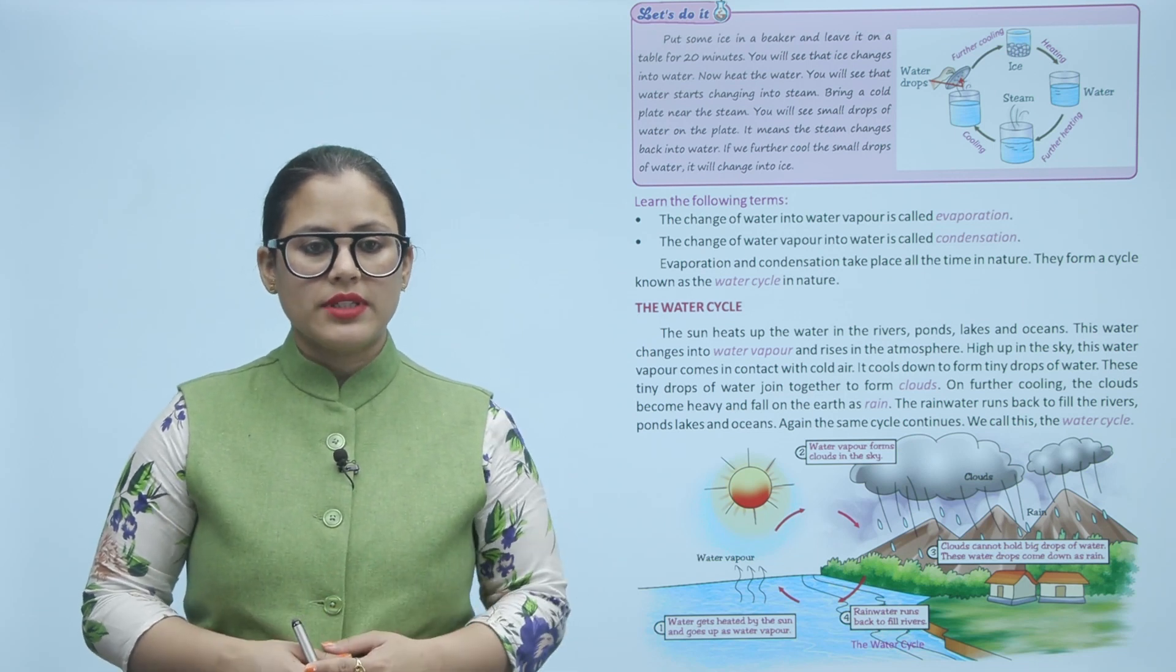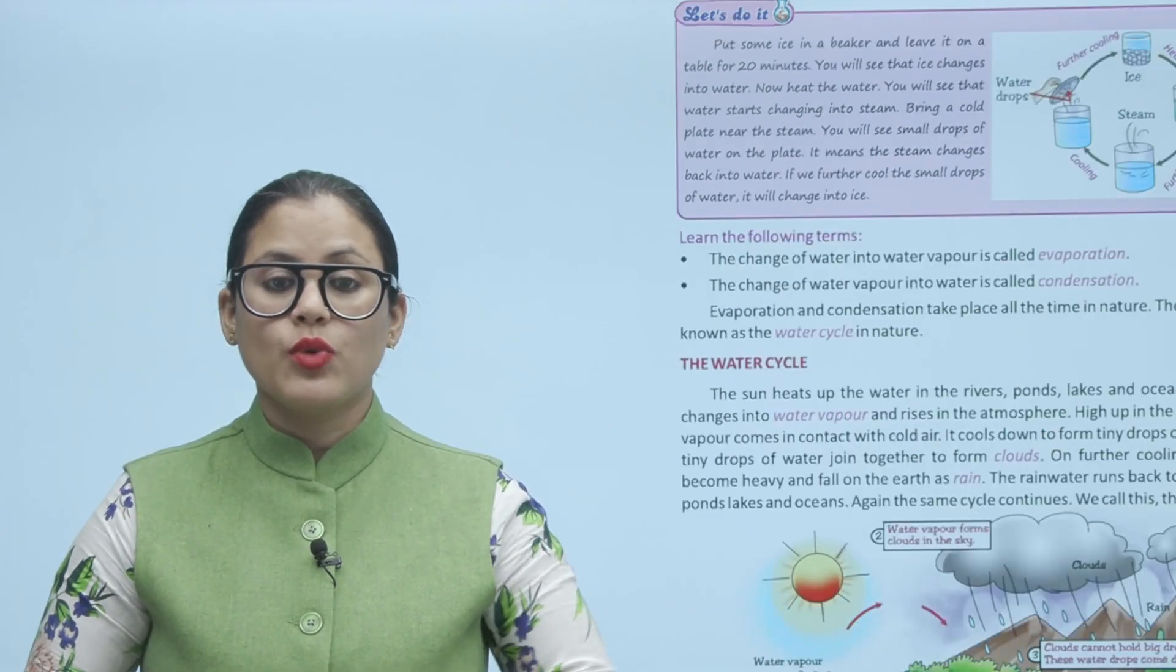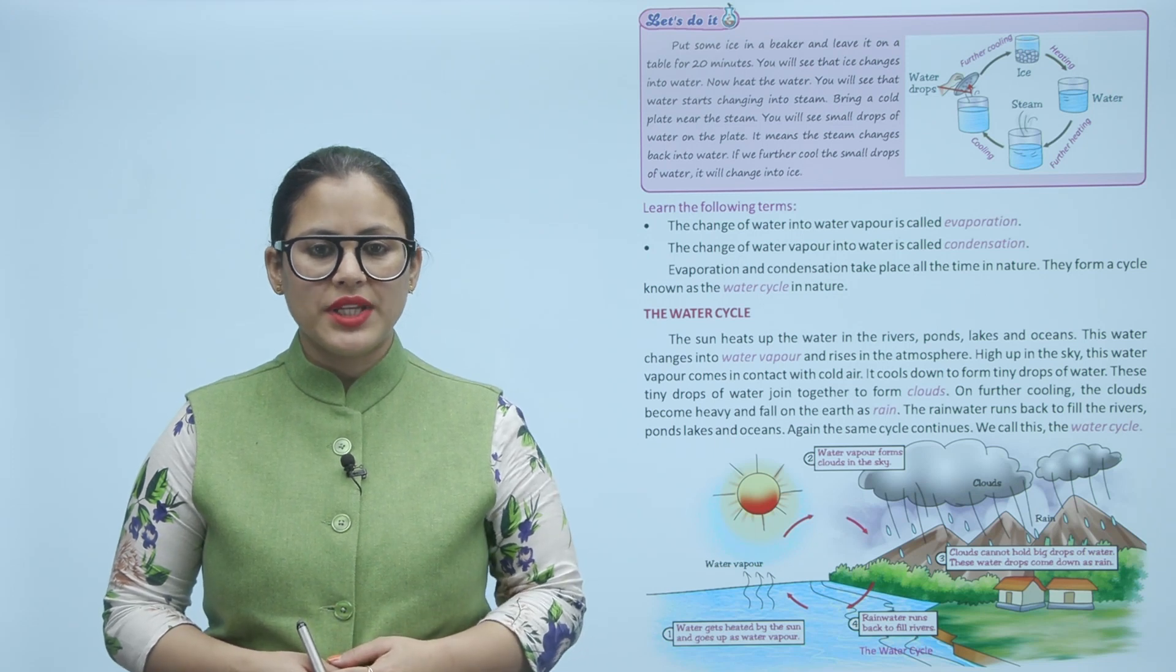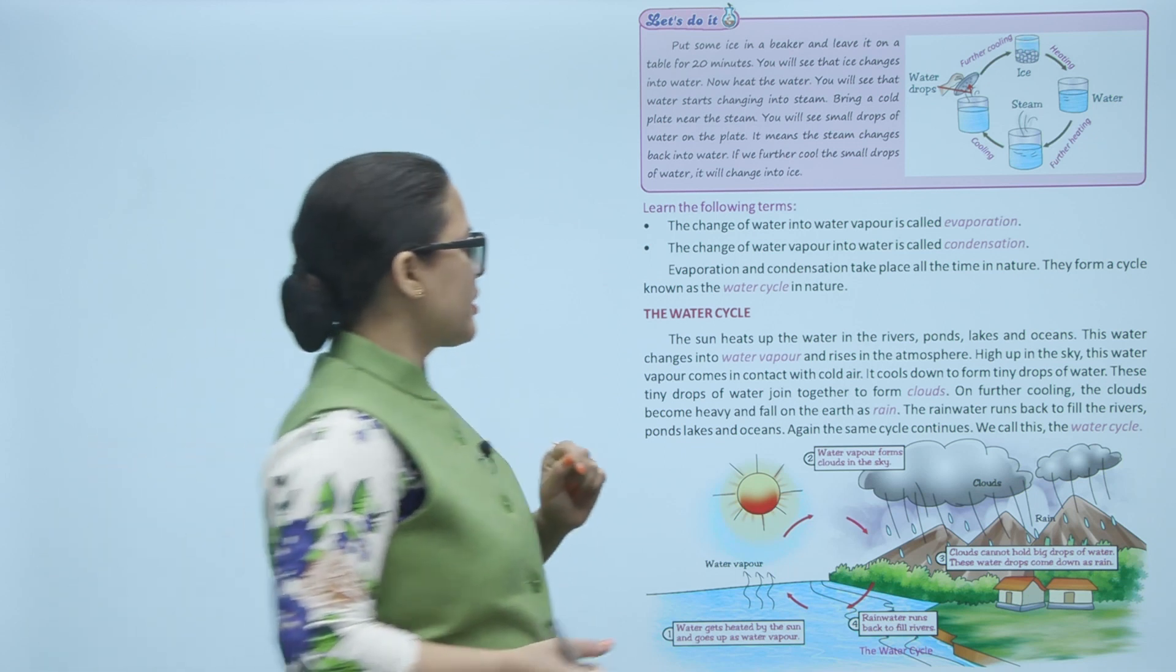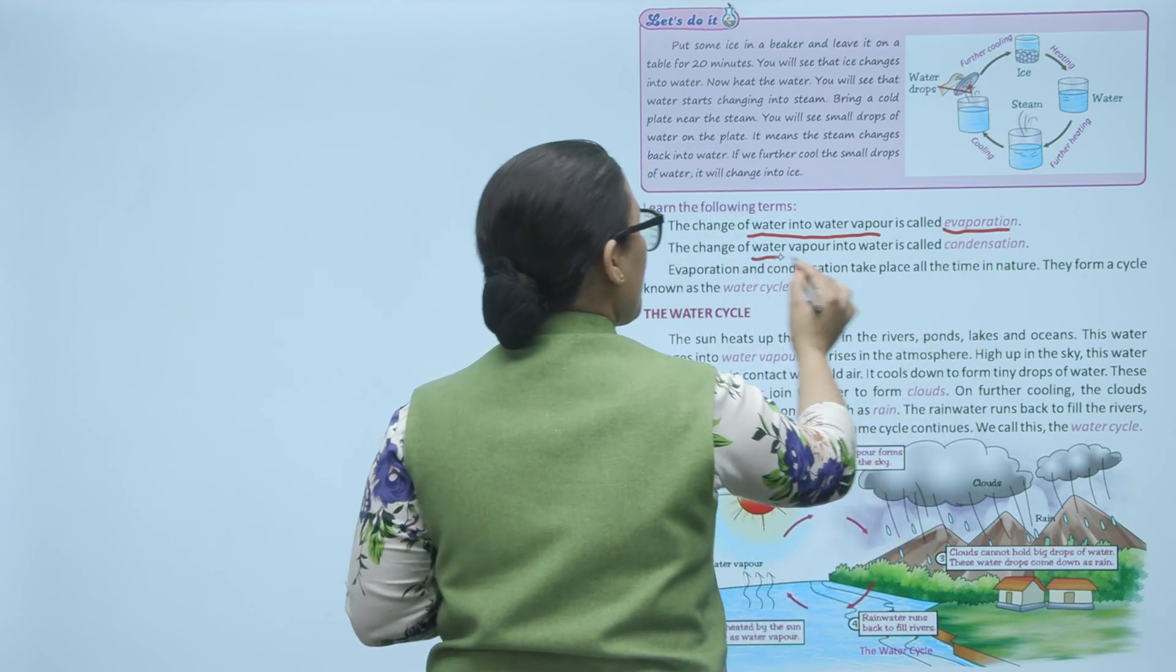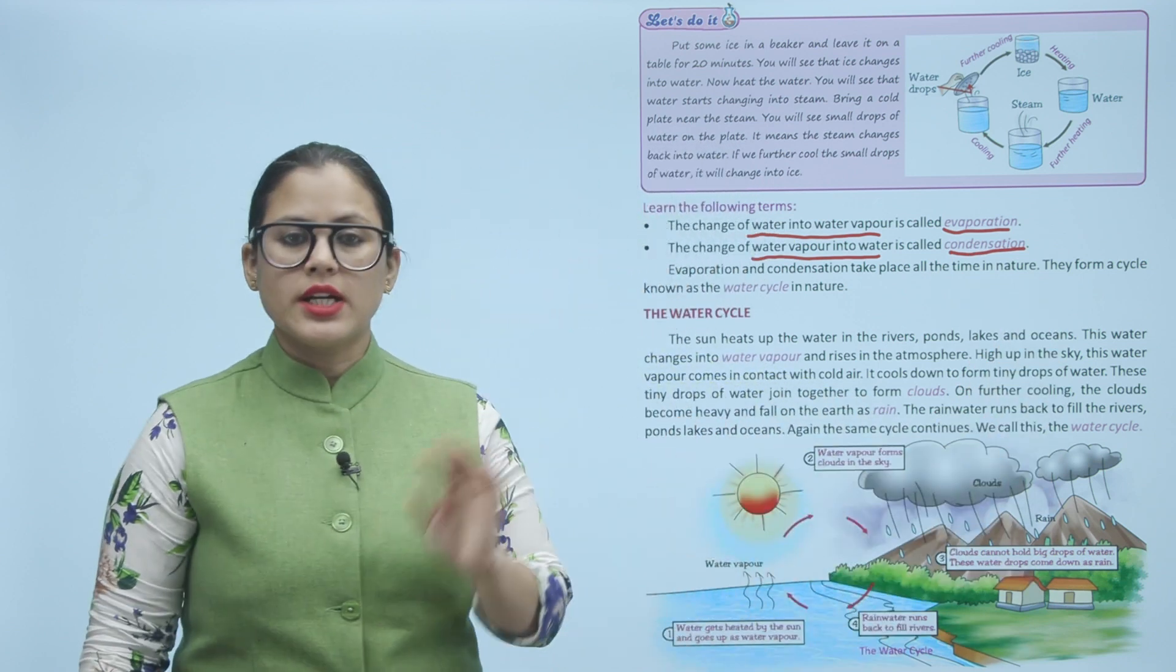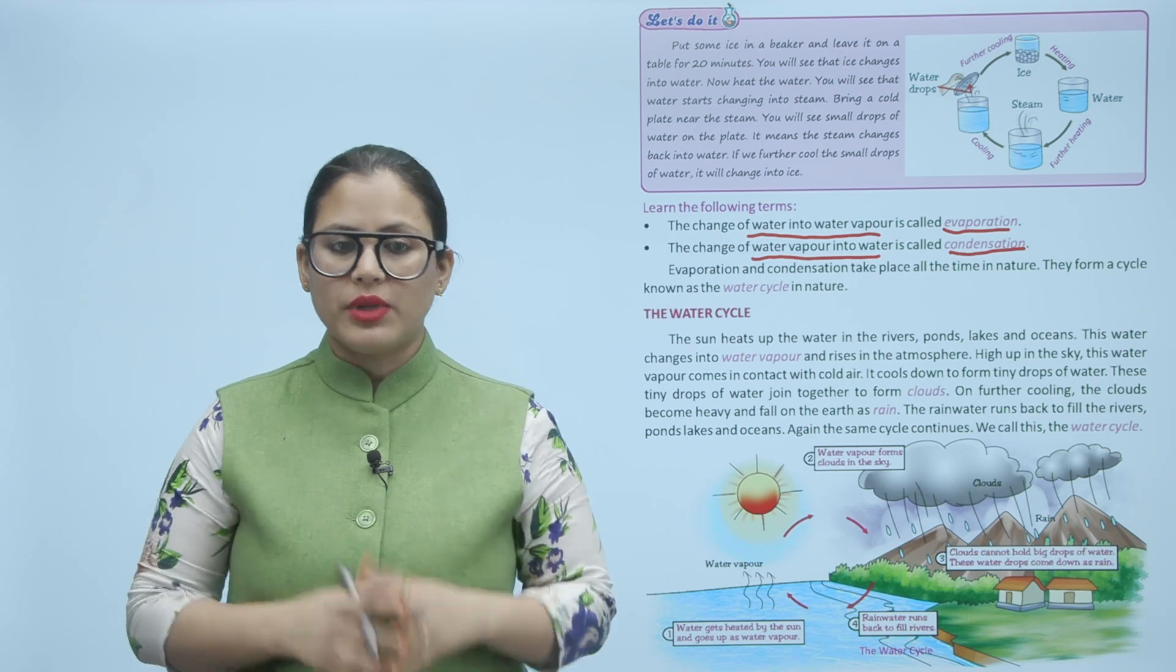Learn the following terms. The change of water into water vapor is called evaporation. The change of water vapor into water is called condensation. Evaporation and condensation take place all the time in nature. They form a cycle known as the water cycle in nature.